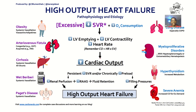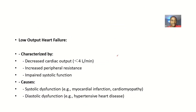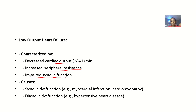Now let's talk about low output heart failure. In this type of heart failure, the cardiac output is decreased — less than four liters per minute. On the basis of this, there is increased peripheral resistance and impaired systolic function. So: decreased cardiac output, increased peripheral resistance, and impaired systolic function are the hallmarks of low output heart failure.